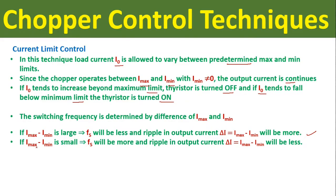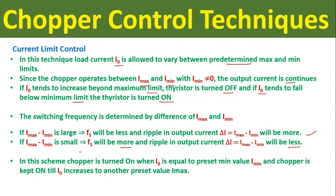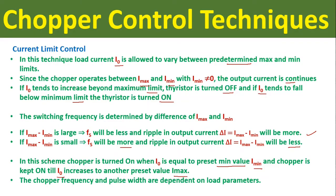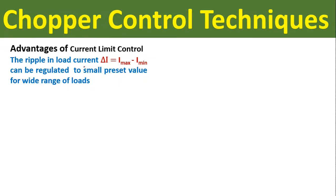If the difference between maximum and minimum values of load current is small, then the switching frequency will be more and the ripple in output current ΔI0 will be less. The chopper is turned on when the load current equals the preset minimum value I0_min, and kept on until the load current increases to the preset maximum value I0_max. In this current limit control, the chopper frequency and pulse width are dependent on the load parameters.